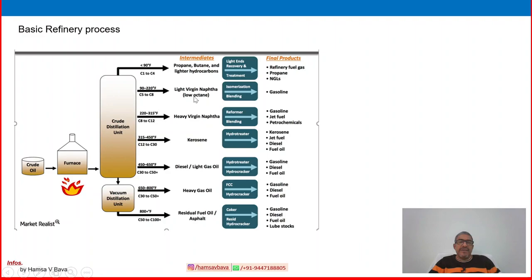You can see naphtha, heavy virgin naphtha, light virgin naphtha, kerosene, diesel, heavy oil, residual fuel oil, or asphalt. And here the secondary processing — or purification, or conversion, or advanced refinery process — various processes are available.